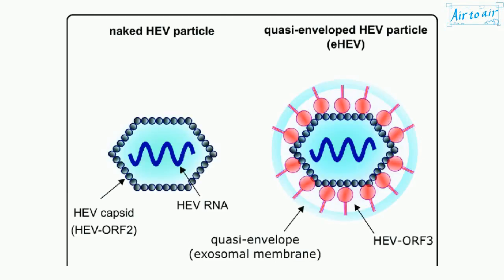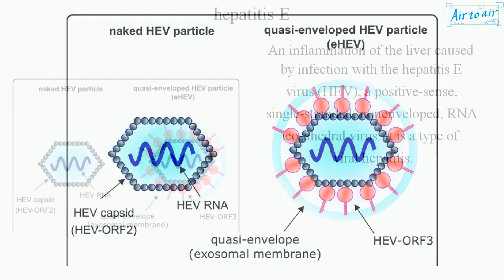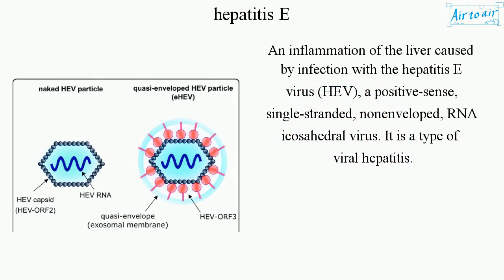Hepatitis E is an inflammation of the liver caused by infection with the Hepatitis E virus, HEV, a positive-sense, single-stranded, non-enveloped, RNA icosahedral virus. It is a type of viral hepatitis.